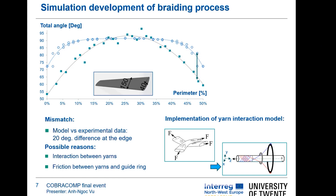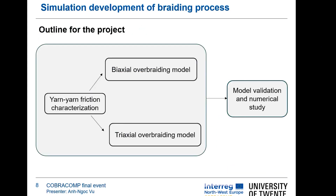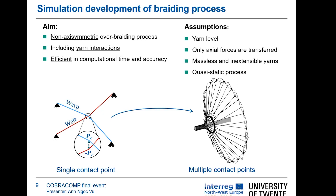Our aim is to implement the yarn interaction model on the base of the kinematic model. We go step by step: first we develop a biaxial overbraiding model and then extend it to a triaxial overbraiding model. The model requires inputs, in this case yarn-yarn friction, so we need to develop a method to determine this friction. Later, we do model validation and numerical study. The aim is to develop a simulation model valid for varied mandrel shapes, including yarn interaction, and efficient in computation time and accuracy.